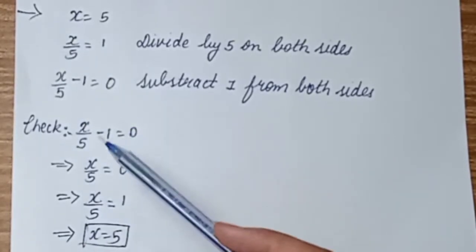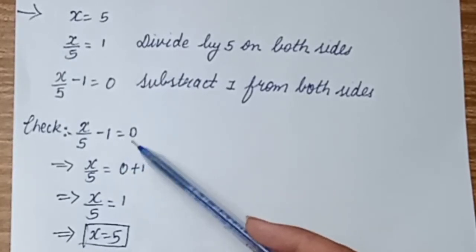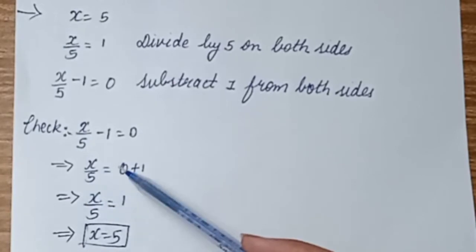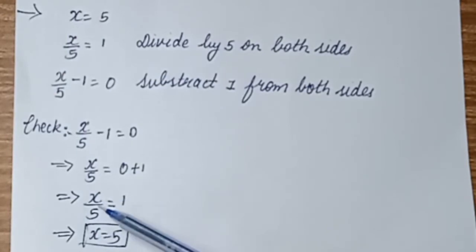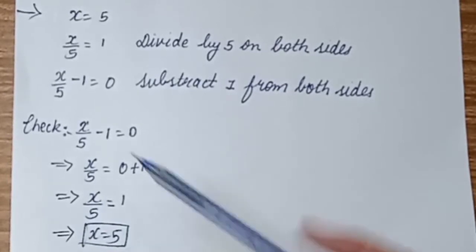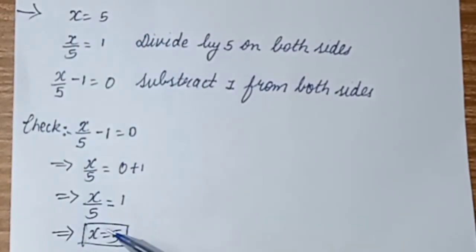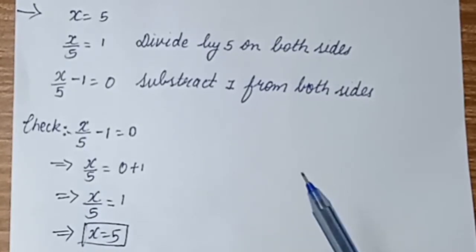Now we check the solution. We have x upon 5 minus 1 is equal to 0. Adding 1 to both sides gives x upon 5 is equal to 0 plus 1, which is 1. Then multiplying both sides by 5 gives x is equal to 5. So we started with x is equal to 5, applied operations, formed an equation, and when solved we get back x is equal to 5, confirming the solution.